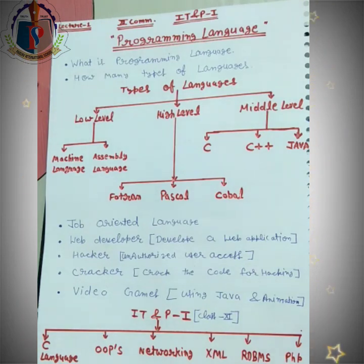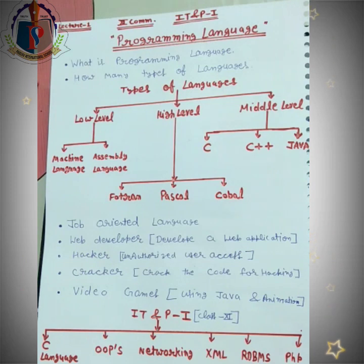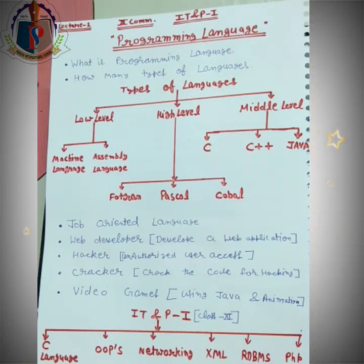Machine language mein jo hamara source code hota hai — jo hamne code likha hai — vo machine language mein convert hota hai. Assembly language mein jo hamara machine code hai, pehle assembly mein convert hota hai, phir convert hokar wapas machine code mein run hokar wapas hamen milta hai.